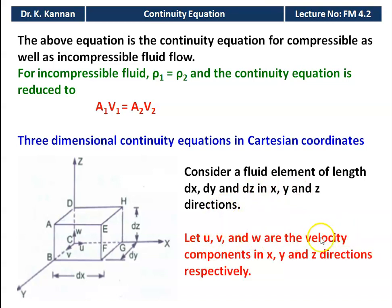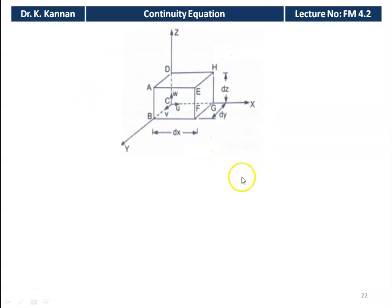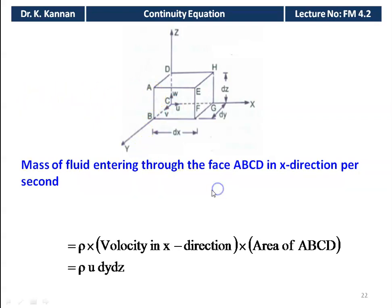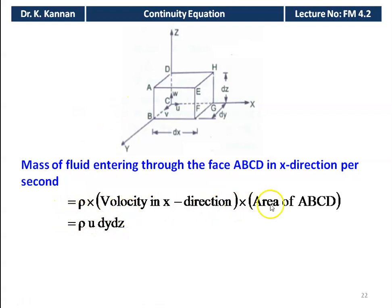U, V, W are the velocity components in the x, y, z directions respectively: U is velocity in x, V is velocity in y, and W is velocity in z. The mass of fluid entering through face ABCD in the x direction per second equals rho times U times the area of ABCD, which is dy times dz. So mass entering = rho U dy dz.